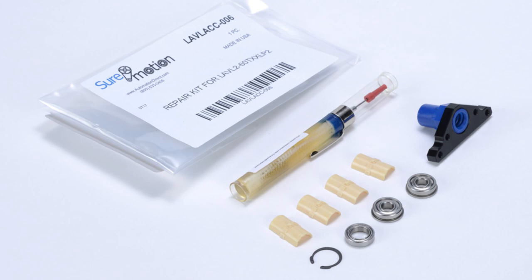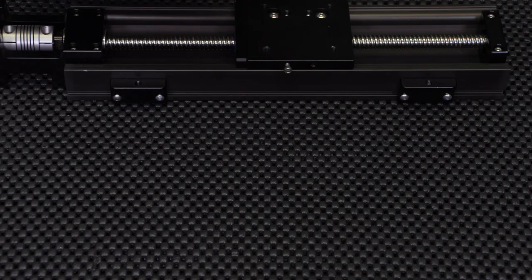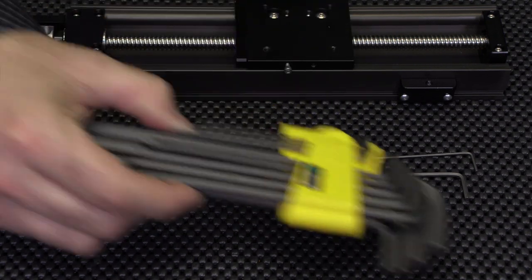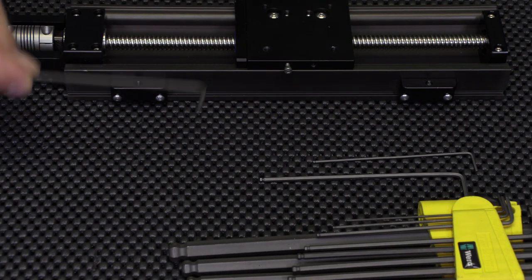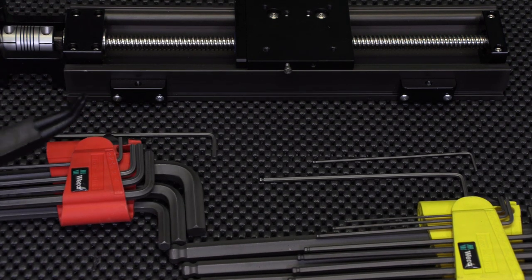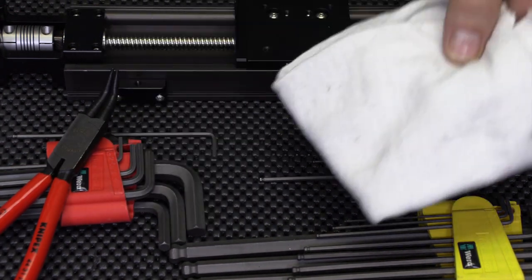You will need the following tools: 1.5mm, 2.5mm, and 3/32 inch Allen wrenches, internal retaining ring pliers, cleaning towels, and safety glasses.